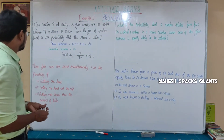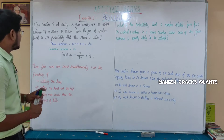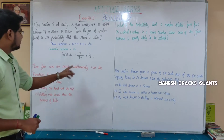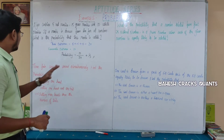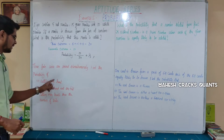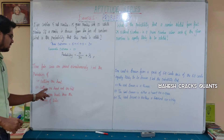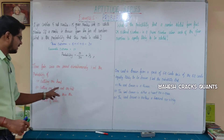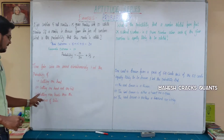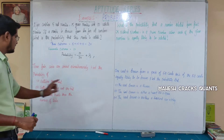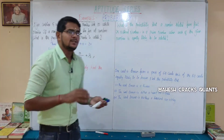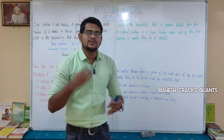Let's move to the next question. Three fair coins are tossed simultaneously. Find the probability of: first, getting one head; second, getting one head and one tail; third, getting more heads than the number of tails.